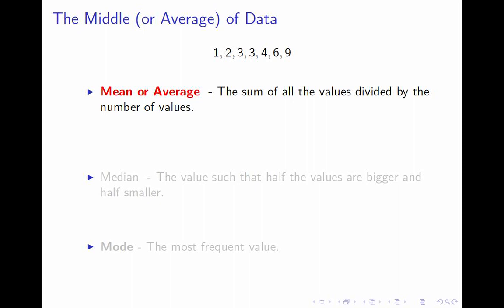I have a sample data set: the numbers one, two, three, three, four, six, and nine. The mean — the average you're used to — is computed by adding up all the numbers and dividing by how many there are. There are seven numbers, so one plus two plus three plus three plus four plus six plus nine equals twenty-eight. Twenty-eight divided by seven is four, so the mean of this data set is four.